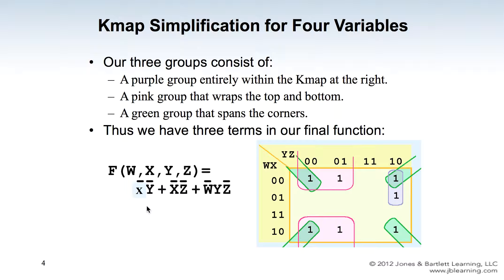The first is the purple group, which has two values of 1 grouped together. The second is the pink group, which has four values of 1 grouped together — it grabs the top and the bottom of the KMAP. The third group also has four values of 1 at the four corners of the KMAP.